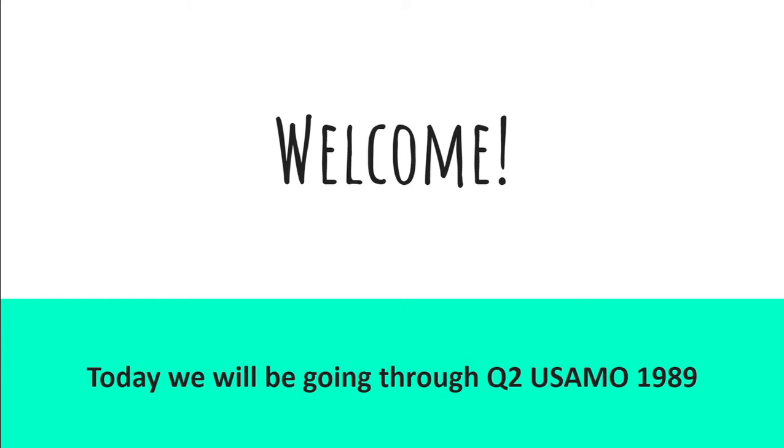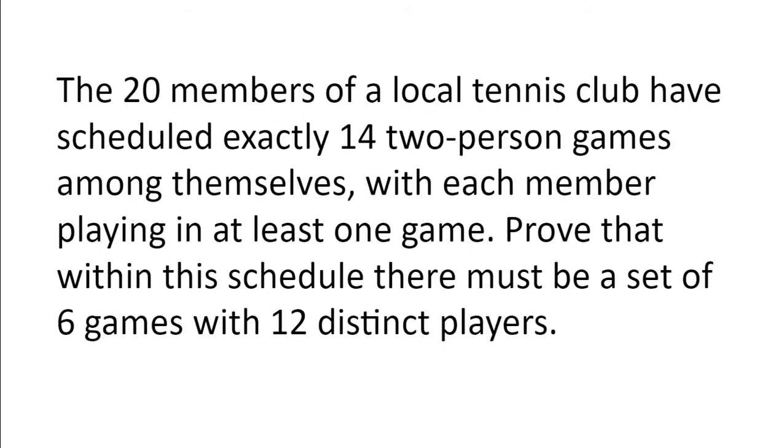Today we will be going through question 2 of the USAMO 1989. The 20 members of a local tennis club have scheduled exactly 14 two-person games among themselves, with each member playing in at least one game. Prove that within this schedule there must be a set of six games with 12 distinct players.